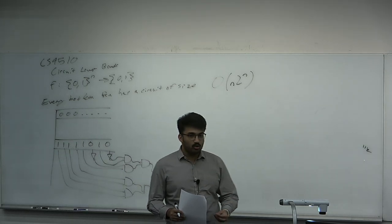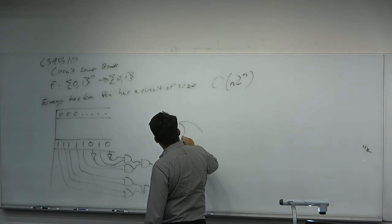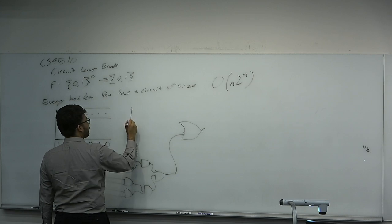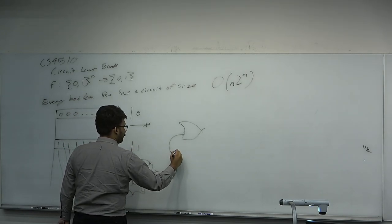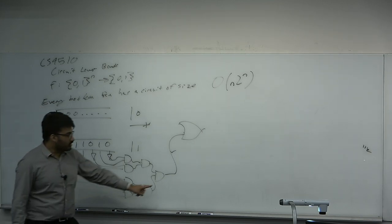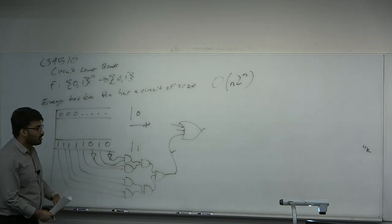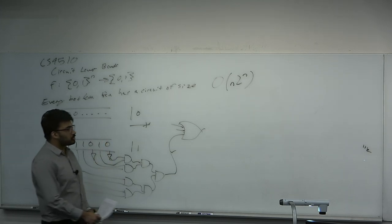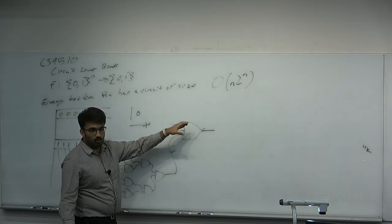I do that for each row. Now I have two-to-the-n of these little wires, and I need to make one output. So I'm going to do a giant OR gate tree. I wire it up to the OR gate tree only if that row's output is a one. If that row is a zero, I'm not going to wire it up. This OR gate tree will be approximately 2^n OR gates deep.